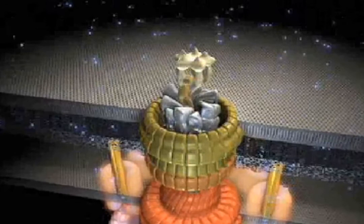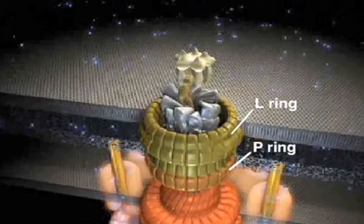Another set of rings, called L and P rings, are found in gram-negative bacteria such as E. coli. They penetrate the outer membrane, forming a bearing for the rod.